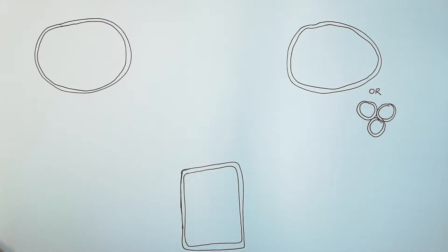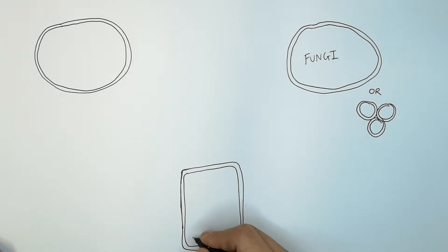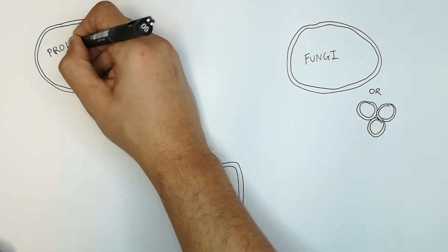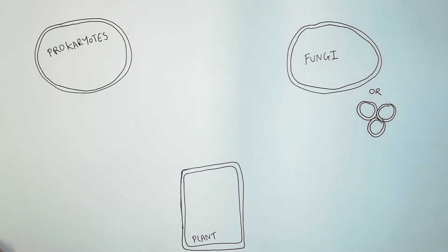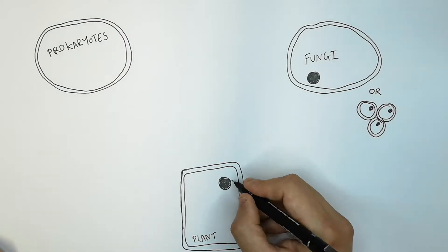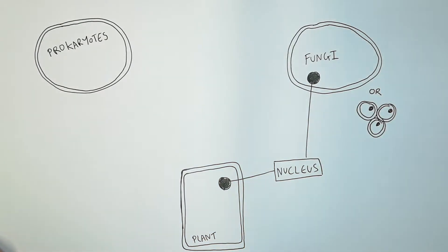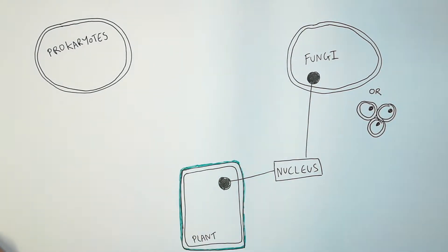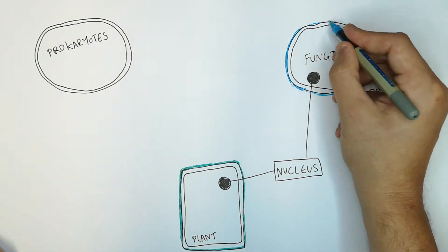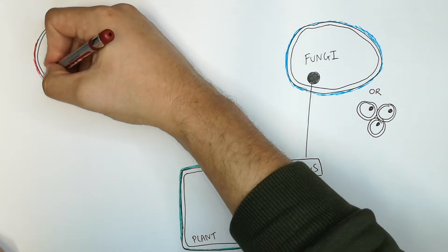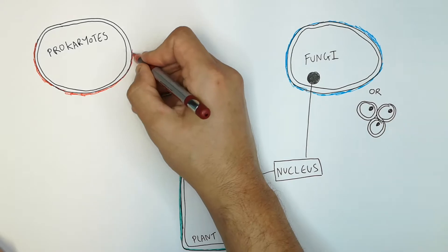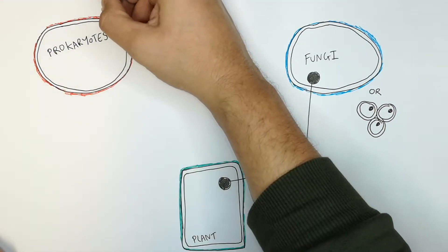The next three kingdoms are fungi, the plant kingdom, and the prokaryotes. Plant cells and fungal cells both have a nucleus, which means they are eukaryotic cells. Plant cells have a cell wall, and fungal cells also have a cell wall, as do the bacteria — the prokaryotes.